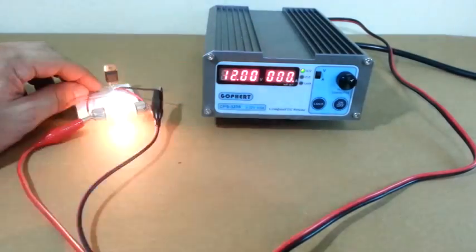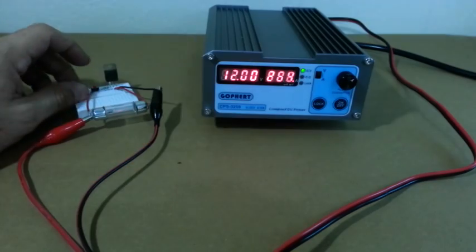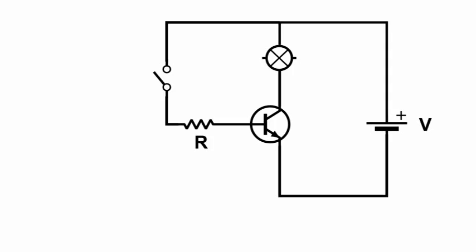This video will show you how to use a transistor as a switch. This is a typical circuit that uses a transistor to turn a lamp on and off.